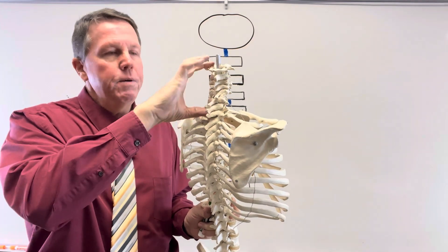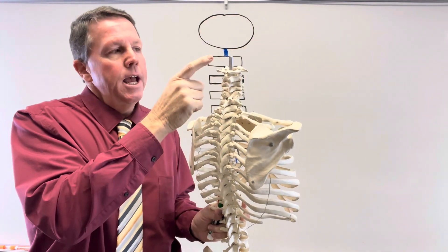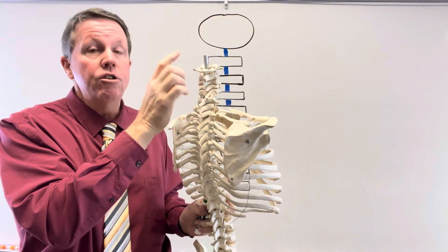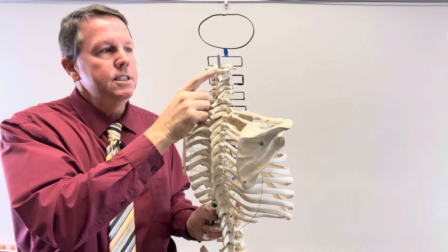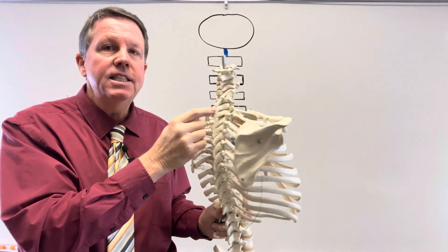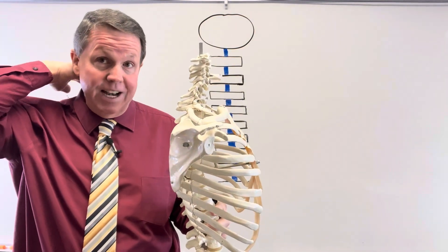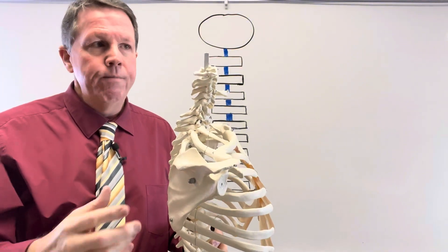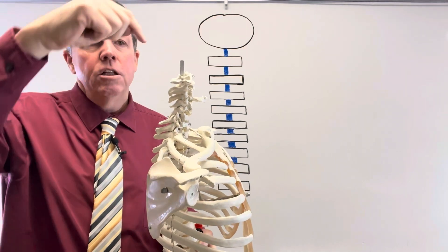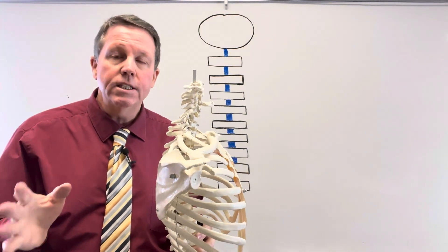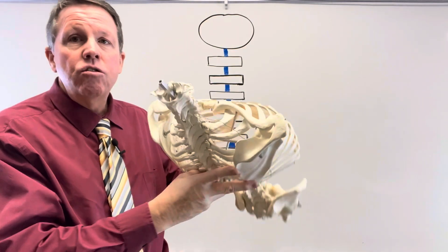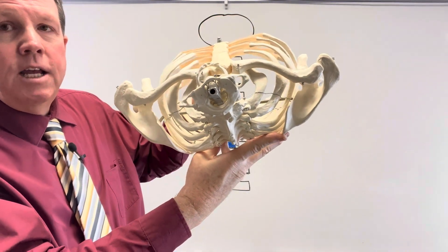Up here is our cervical spine — this is the neck area. These are called cervical vertebrae and we number them: C1, C2, C3, C4, C5, C6, C7. C7 is the one you can feel sticking out at the base of your neck. Now, this bar here represents the spinal cord, which is inside the spinal column — the column protects the cord. The spinal cord is made of nerves; the spinal column is made of bone.